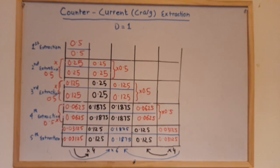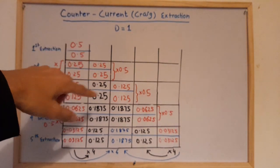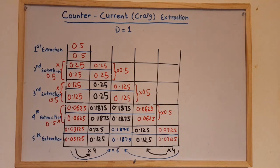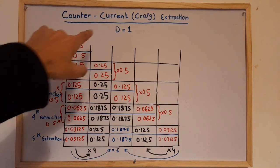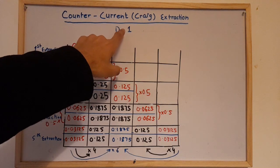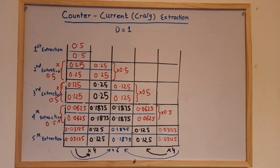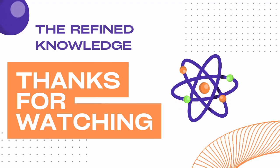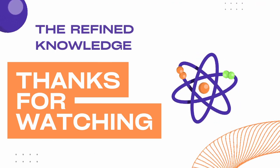So this is the way we solve the counter-current Craig extraction table for distribution ratio d=1. There are exceptions when solving for d=3 or d=4, which we'll cover in the next video. Thank you so much for watching.